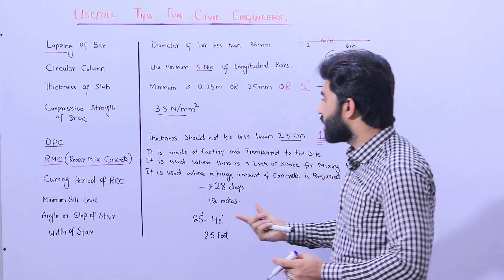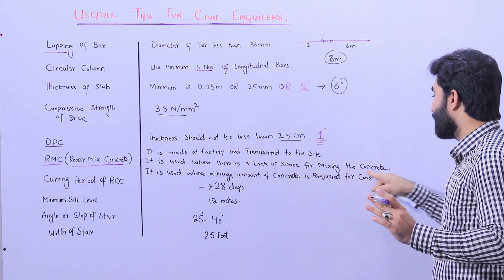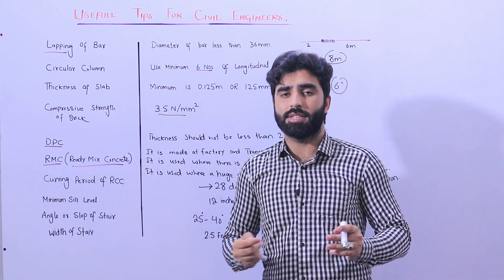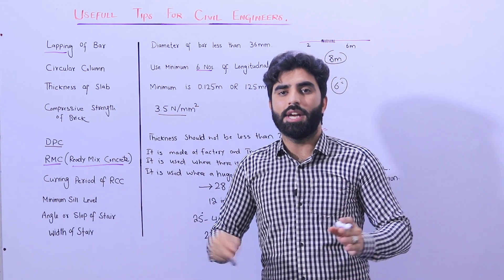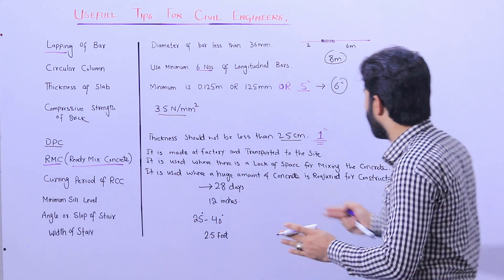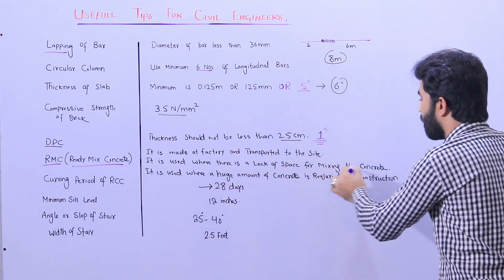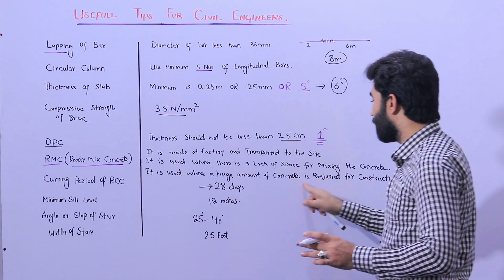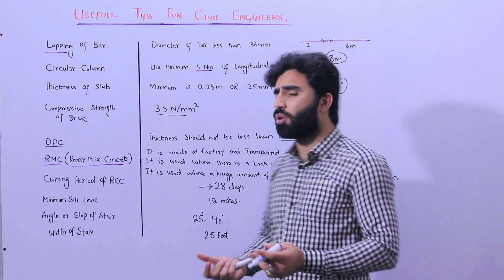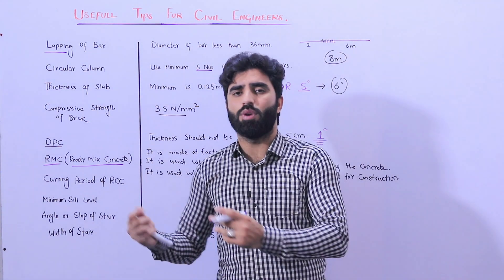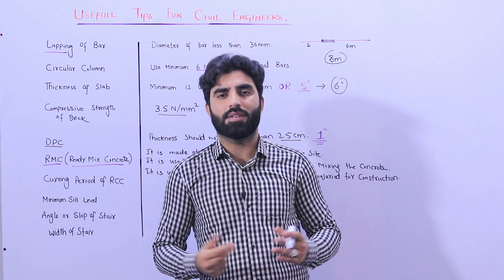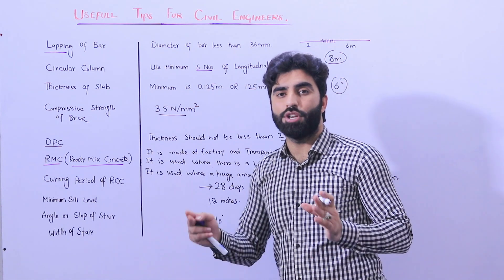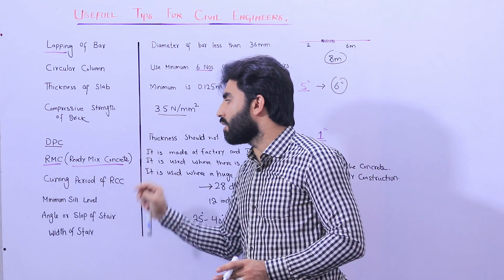RMC is used where there is a lack of space for mixing concrete. The concrete is brought in a truck and mixed inside the drum on the way to the site. It is also used where a huge amount of concrete is required. For normal residential or commercial buildings we don't usually require it, but for huge projects requiring large volumes of concrete, we use Ready Mix Concrete.